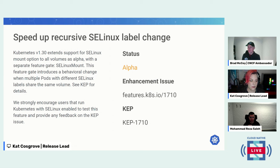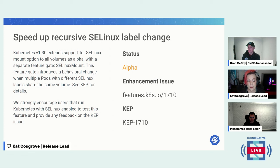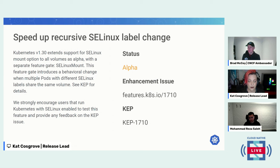Now we're into the alpha features. Alphas are off by default but can be enabled with a feature flag — none of these will surprise you when upgrading to 1.30, but they're there if you want to try them out. Please do try them so we can improve them over time. The first alpha is speed up recursive SELinux label change. Kubernetes 1.30 extends support for the SELinux mount option to all volumes as alpha with a separate feature gate, SELinuxMount. This feature gate introduces a behavioral change when multiple pods with different SELinux labels share the same volume — see the KEP for details. We strongly encourage users running Kubernetes with SELinux to test this feature and provide feedback.